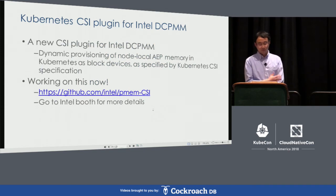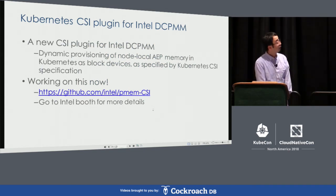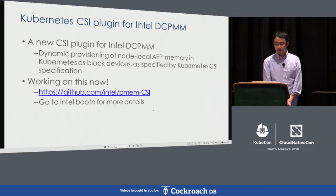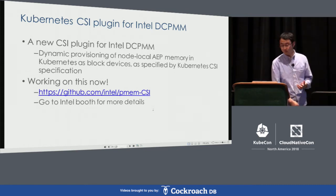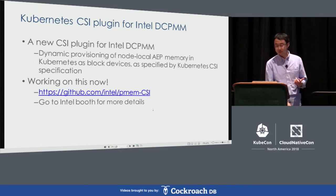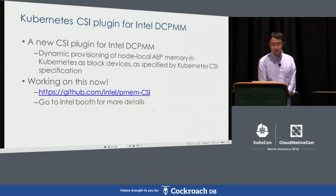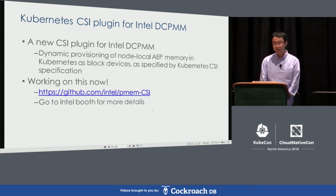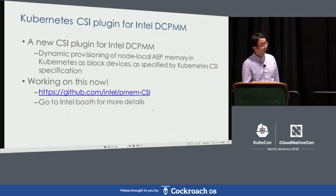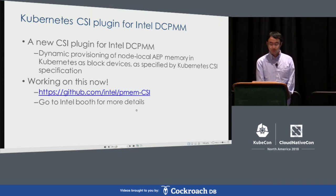Just a heads up: Intel's Kubernetes team is developing CSI plugins for this DIMM. They have working code right now. The idea is to expose node-local DIMM to Kubernetes as a persistent device. This is a starting point; in future they will provide more features like different form factors and different memory modes. They have a public repo — and if you want to know more details, just go to the Intel booth.